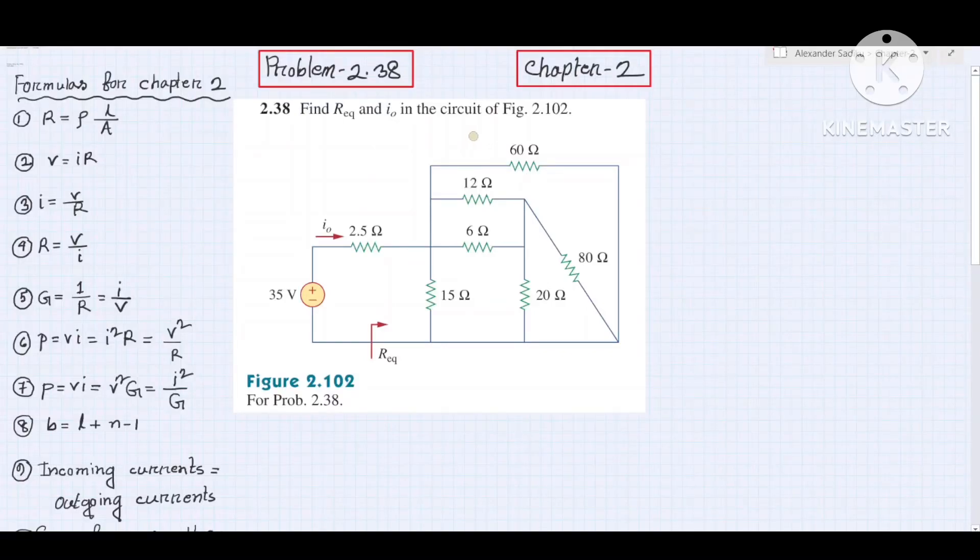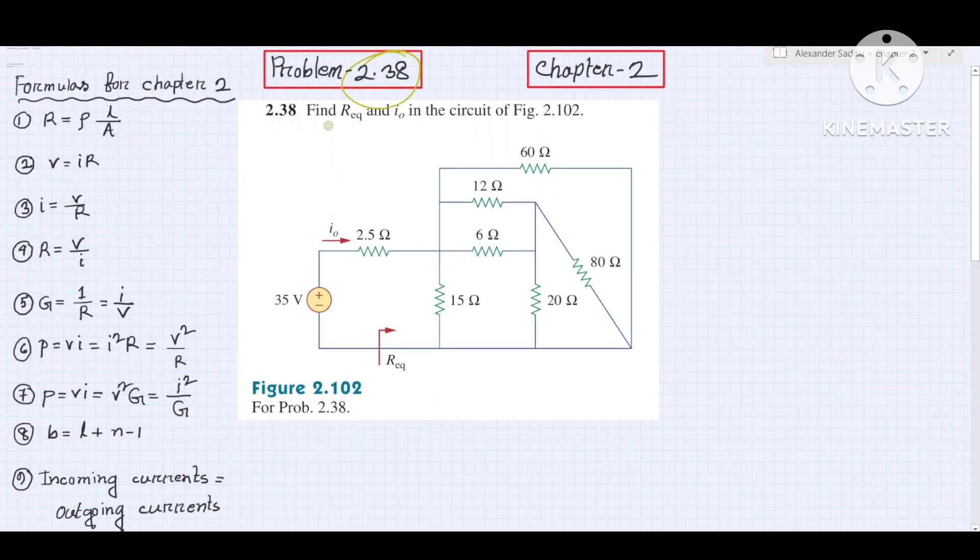Alexander and Sadiku, Fundamentals of Electric Circuits, Chapter 2, Problem 2.38: find Req and i0 in the circuit of Figure 2.102. That means in this circuit, find the equivalent resistance Req and the i0 current. At first we find Req, which is the equivalent resistance or total resistance.